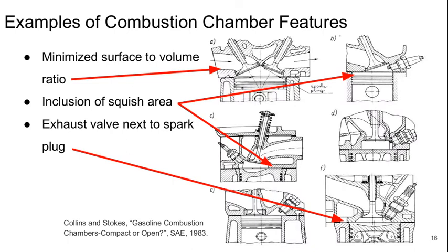Here are some examples of combustion chamber features. If we want to achieve that minimized surface-to-volume ratio, we could have something that looks like this, where it's centered and there's essentially nothing but piston and valve — at minimum volume there's not really any other area directly exposed to the engine block.